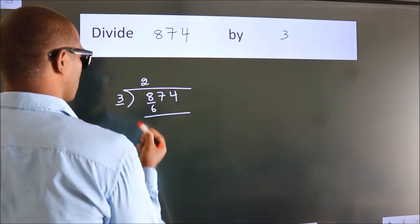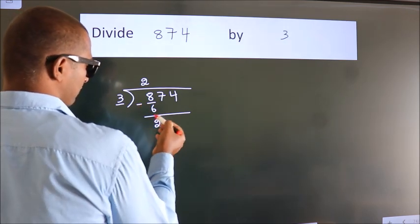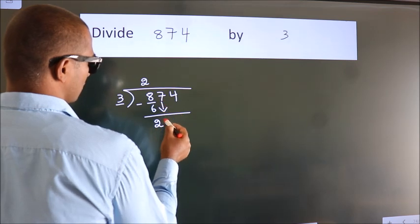Now we should subtract. We get 2. After this, bring down the beside number. So 7 comes down.